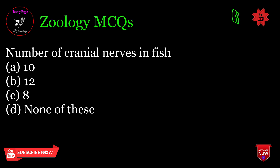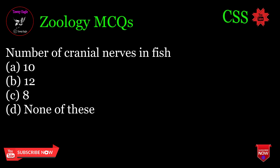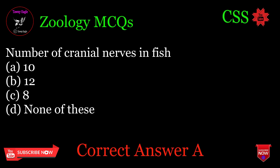Number of cranial nerves in fish: A. 10, B. 12, C. 8, D. None of these. Correct answer: A.